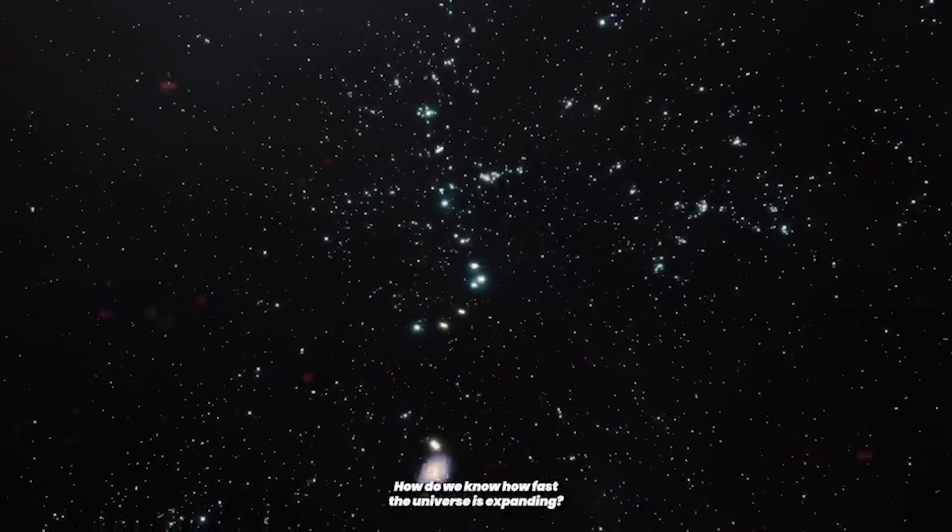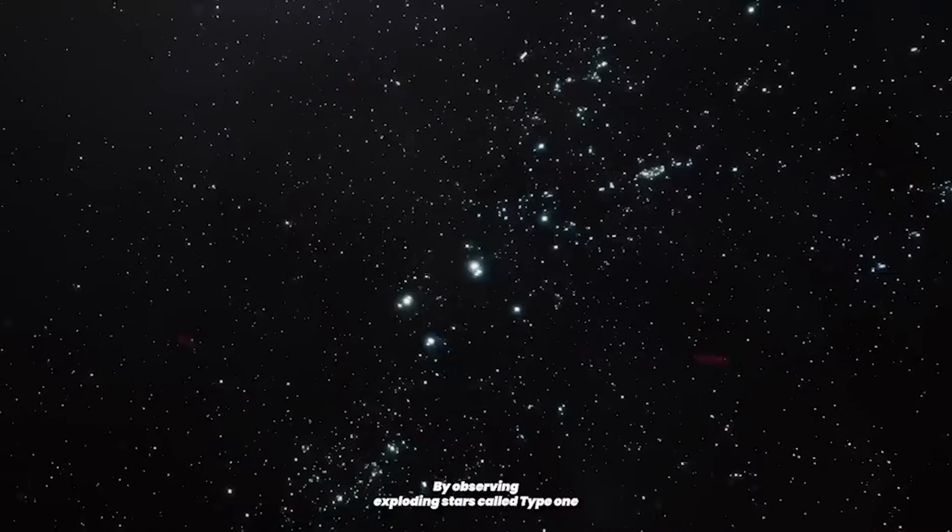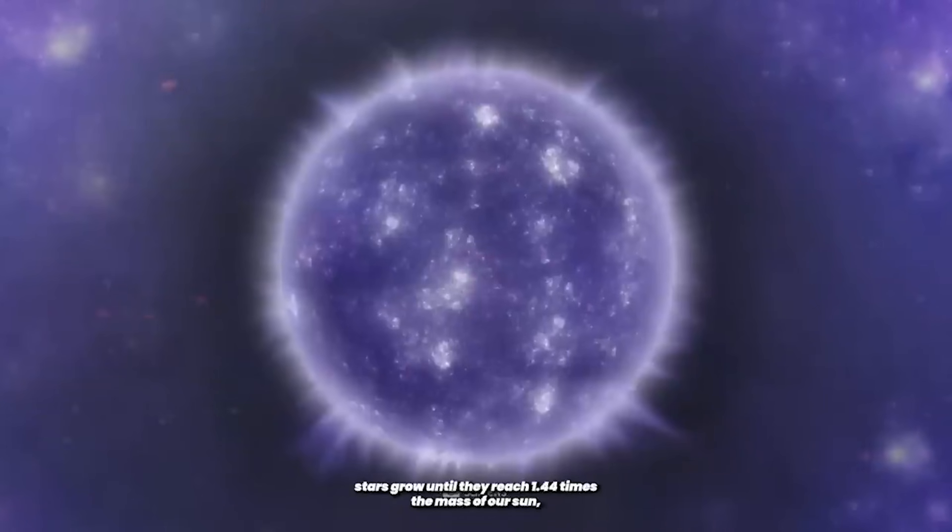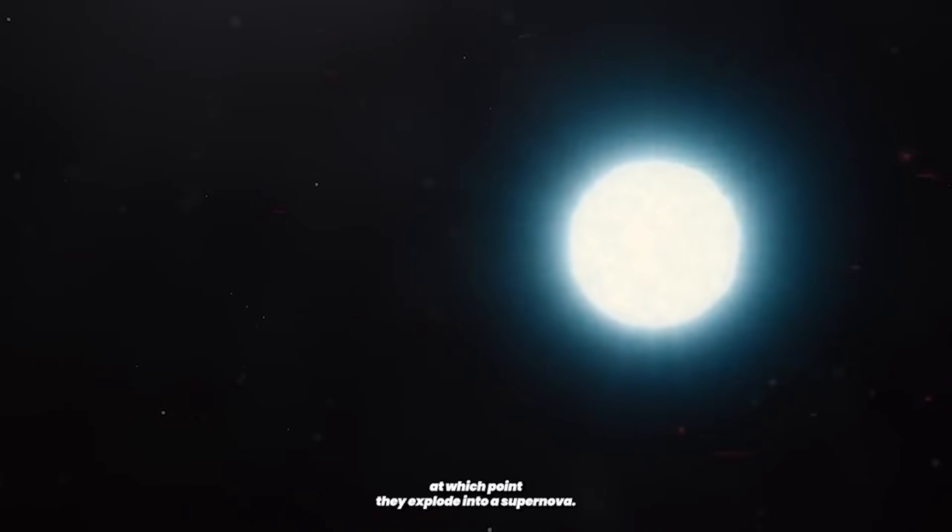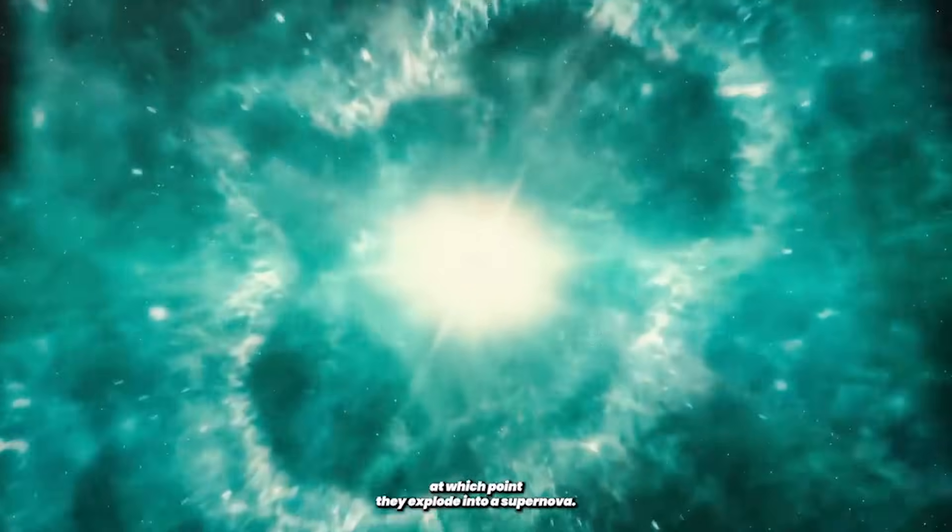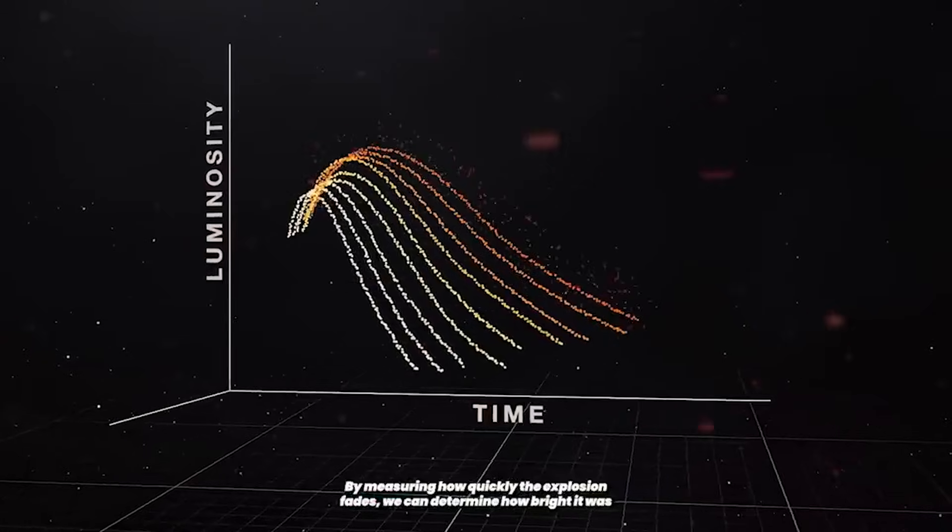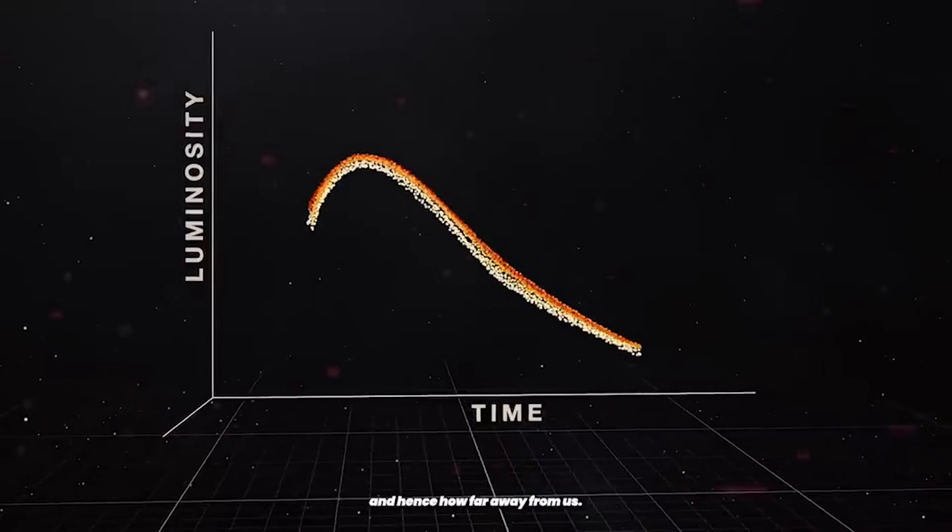But how do we make these measurements? How do we know how fast the universe is expanding? By observing exploding stars called Type 1a supernova. These white dwarf stars grow until they reach 1.44 times the mass of our sun, at which point they explode into a supernova. By measuring how quickly the explosion fades, we can determine how bright it was, and hence, how far away from us.